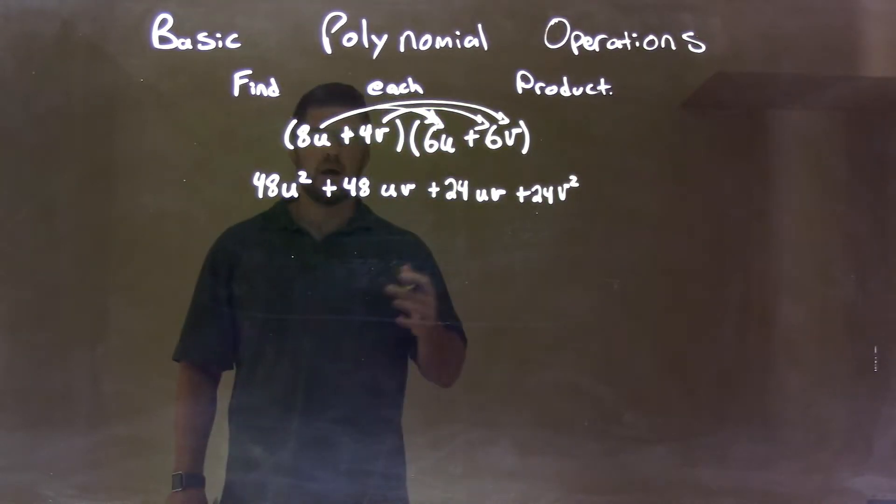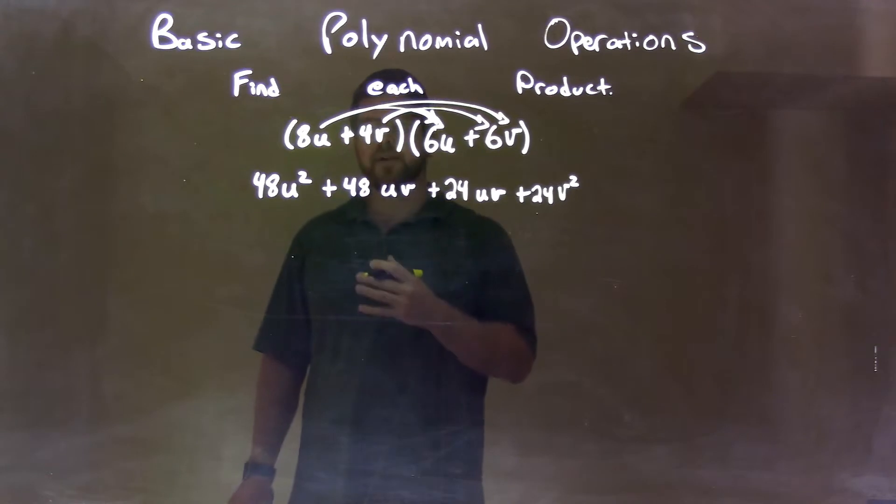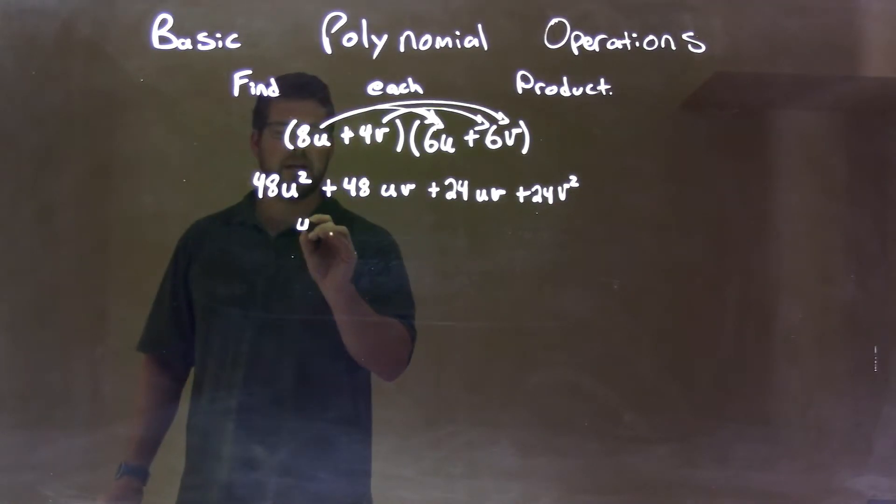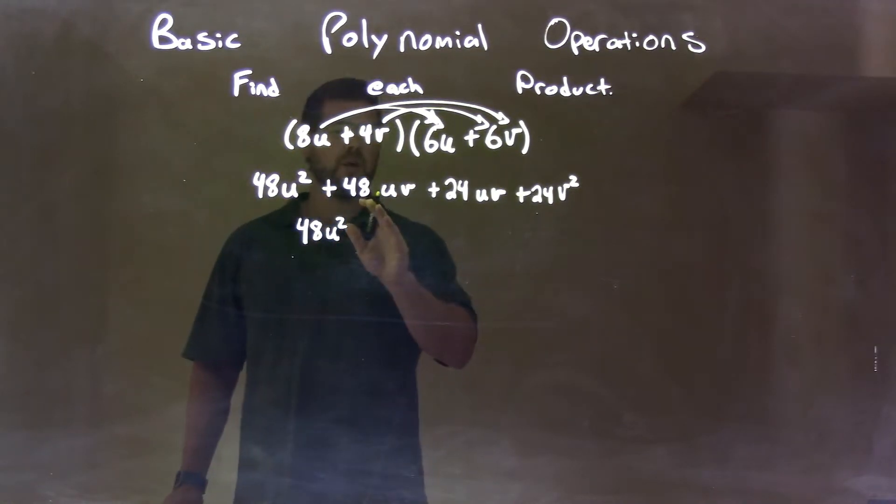So now we want to combine our like terms. Our only like terms we see here are uv and uv. So let's bring down 48u squared, but then we have 48uv plus 24uv. Combine those together, and we get 72uv.